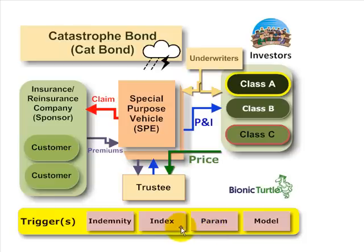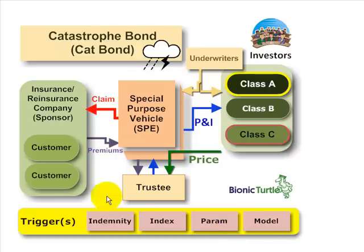The parametric trigger is similar to the index — it's external and objective — but it implies that the payments may be some multiple or formula of that index. The classic example is the Richter scale in the case of an earthquake; a parametric note's compensation might be based on the outcome on the Richter scale. The model trigger is a bit of a hybrid where the payouts are based on parameters fed into a model and would theoretically have a higher correlation to the sponsor's actual exposure. These triggers are a key feature of CAT bonds.